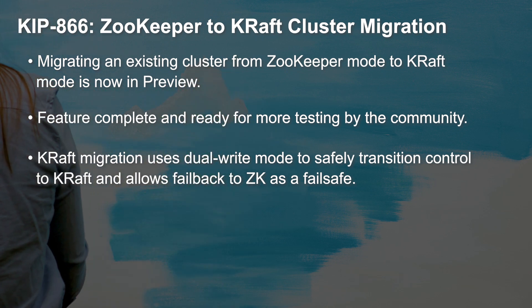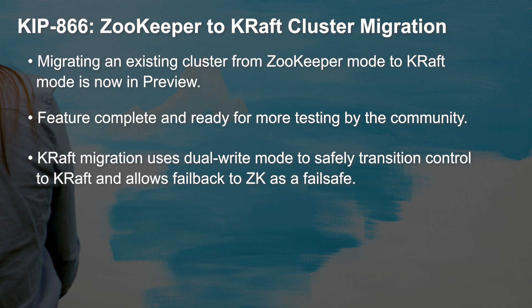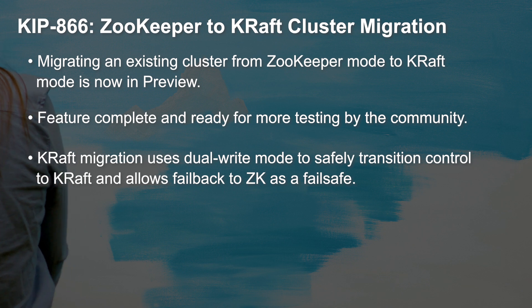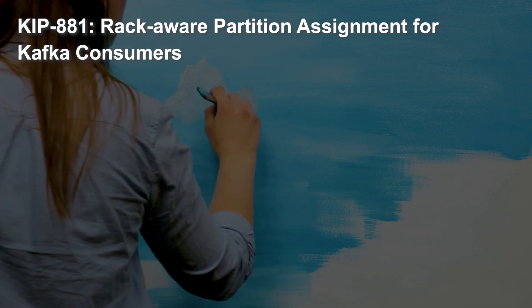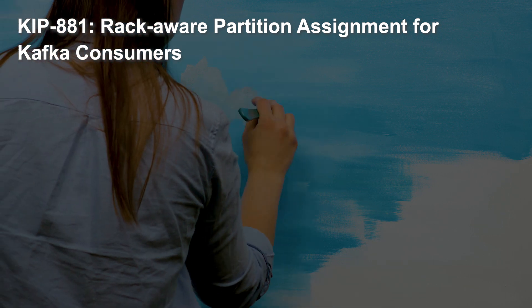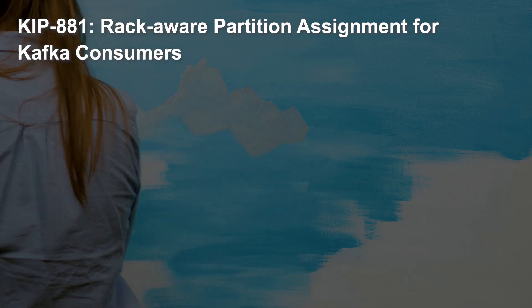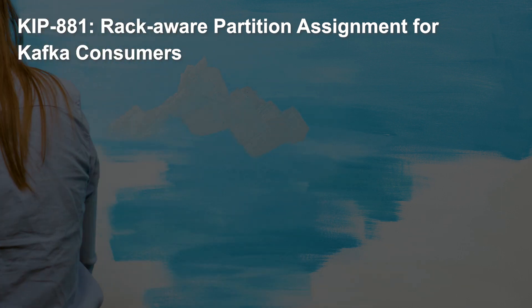Isn't it fantastic that you can change your mind and still safely work with all these happy innovative things? Next up, we have KIP 881, which has to do with rack-aware partition assignments for Kafka consumers. You may recall that I mentioned KIP 881 as part of the Apache Kafka 3.4 release, but at that time the KIP was only partially complete.